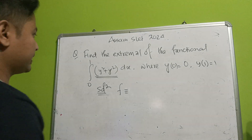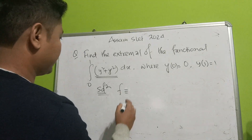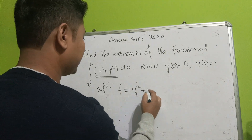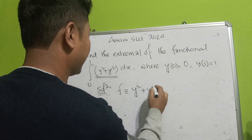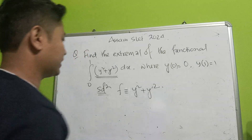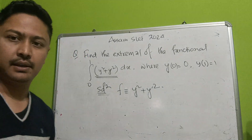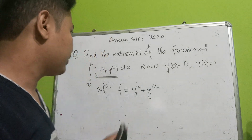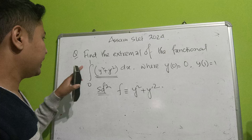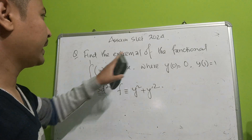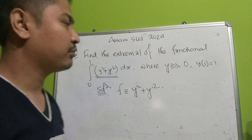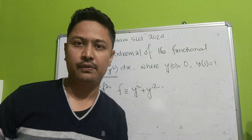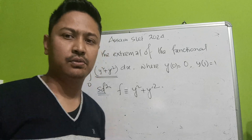So the function f is given as y squared plus y prime squared. The tool we will use to find the extremal curve is Euler's formula for the extremal.